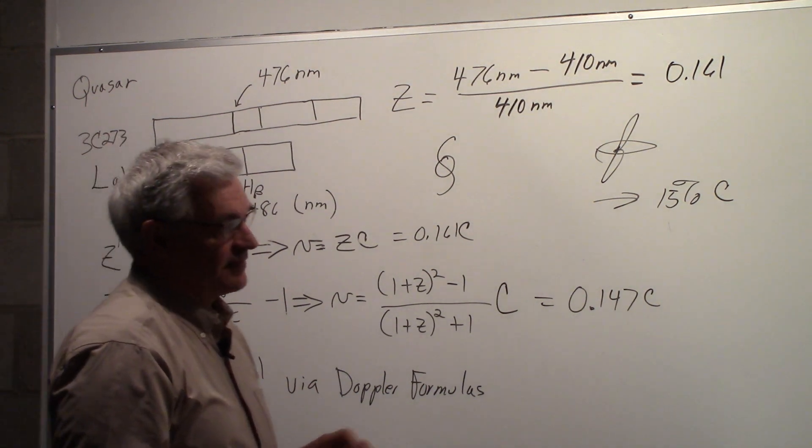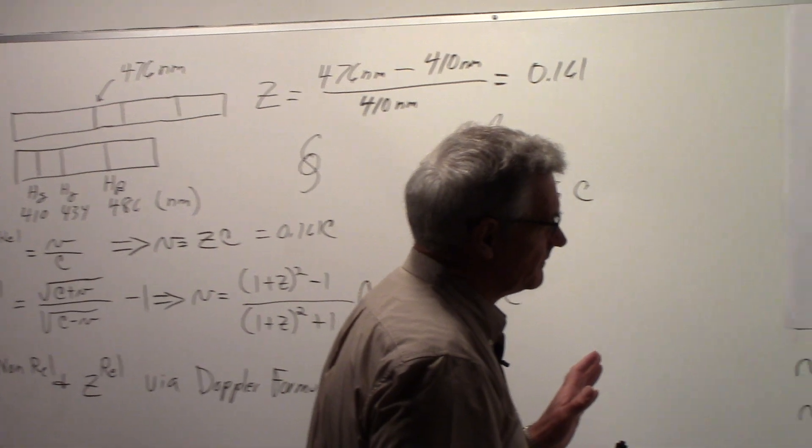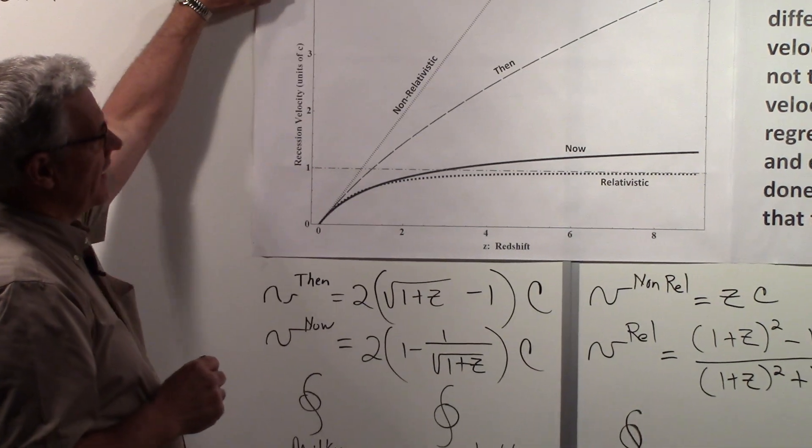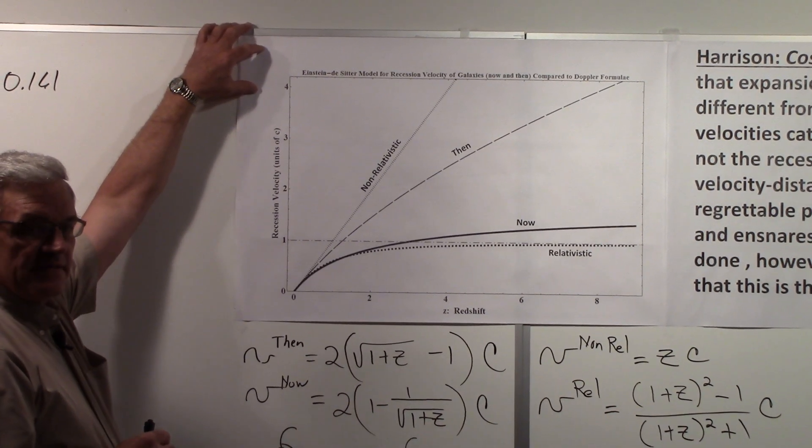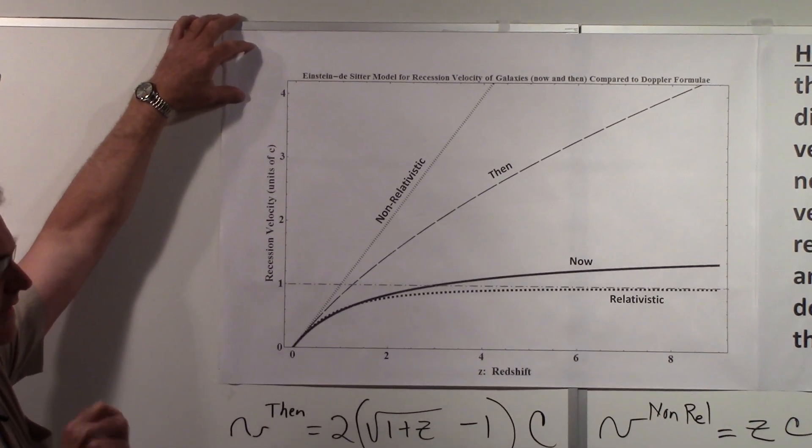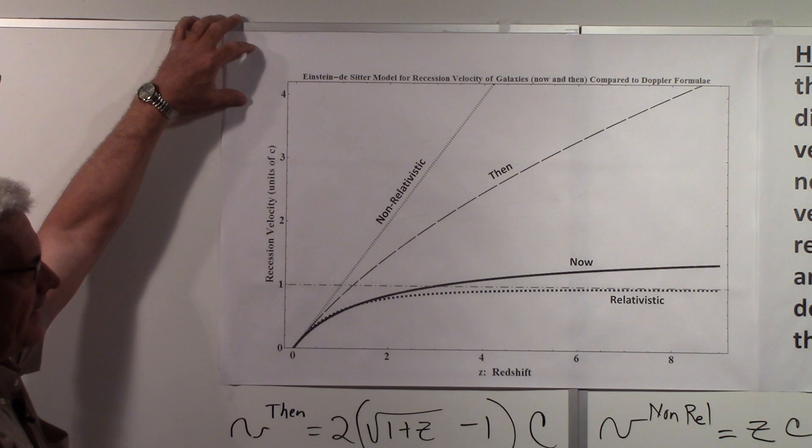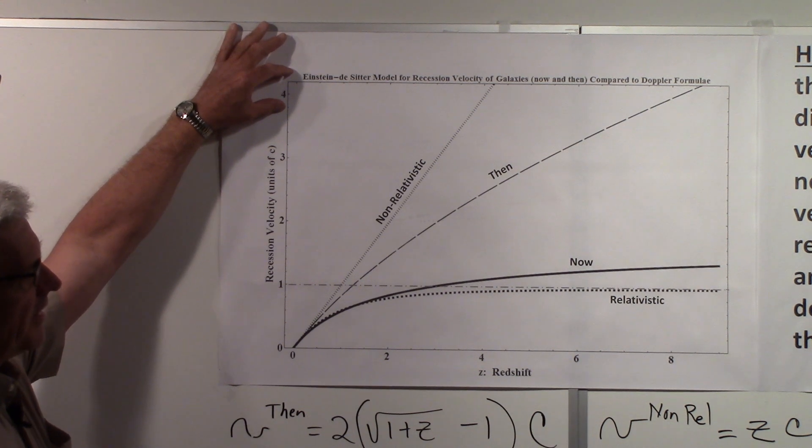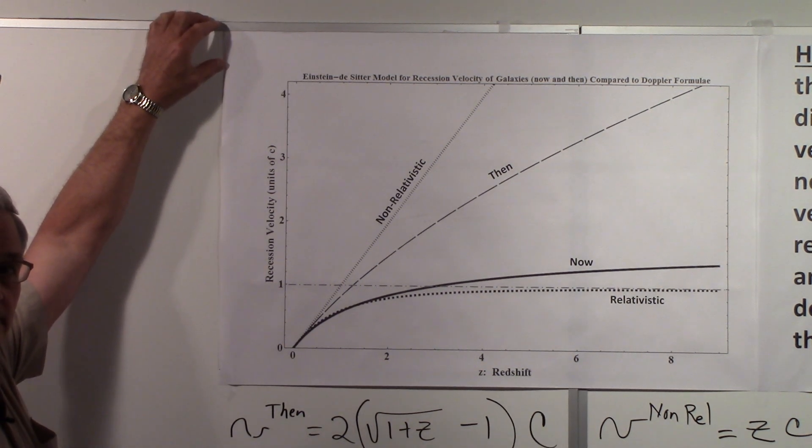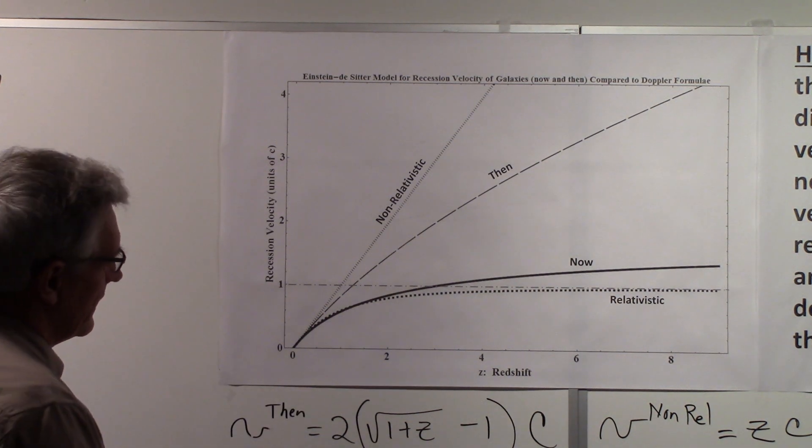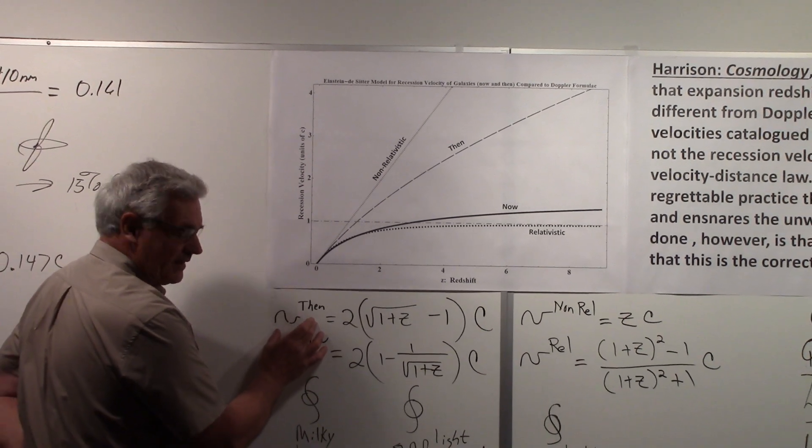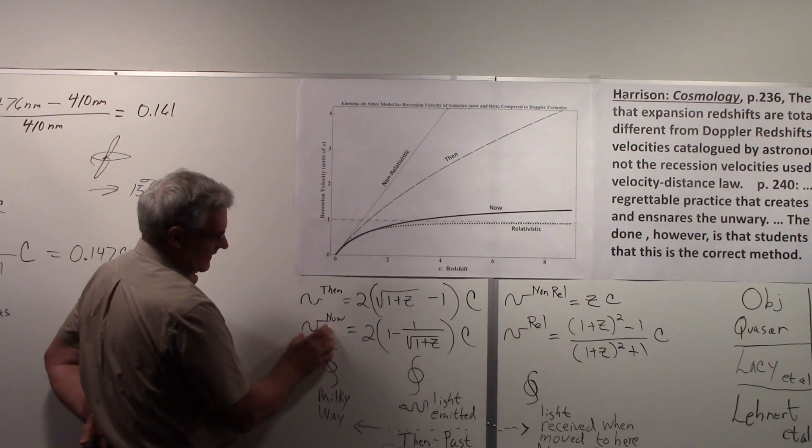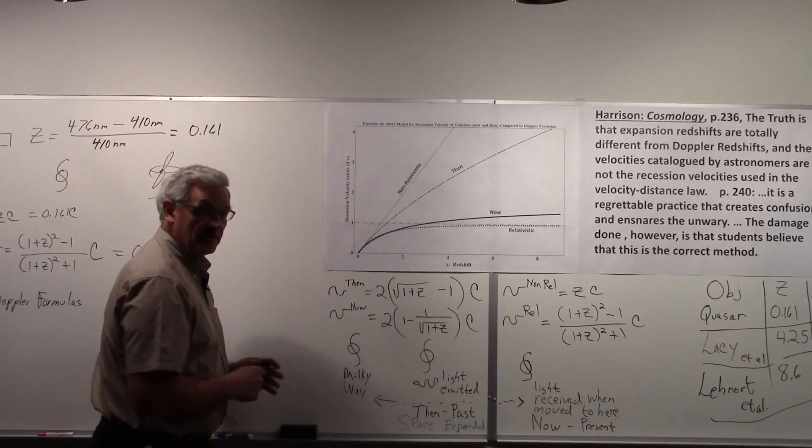And here is a very simple model of the universe. This is called the Einstein-de Sitter model. This is for the recession velocity of galaxies, and there's a term involved, 'now' and 'then,' which I'll explain. And this graph compares those results from the Einstein-de Sitter model with the Doppler formula. The Einstein-de Sitter model tells us that the velocities, called 'then,' is given by this expression, and 'now' is given by this expression. Now what do we mean by 'then' and 'now'?